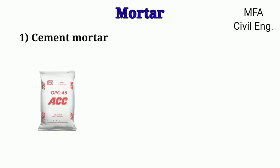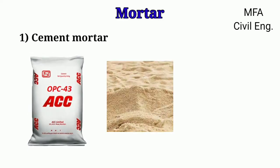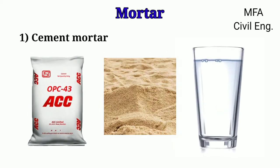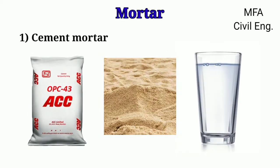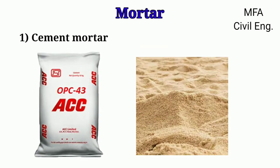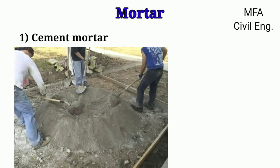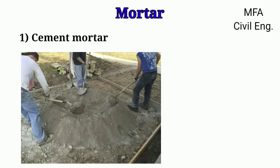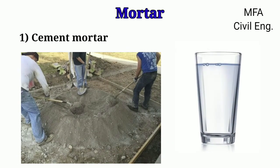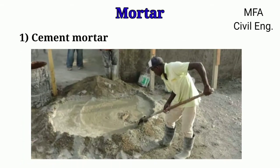Cement mortar is a mixture of cement, fine aggregate (that is sand), and water taken in appropriate proportion. For the preparation of mortar, cement and fine aggregate (sand) are taken in appropriate proportion and mixed with the help of a trowel in a dry state. Then water is added to the mix and again mixed by turning the mixture up and down with the help of the trowel until a homogeneous paste of cement mortar is formed.